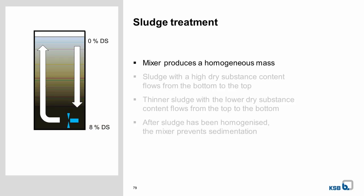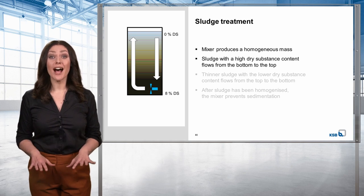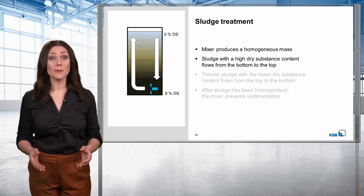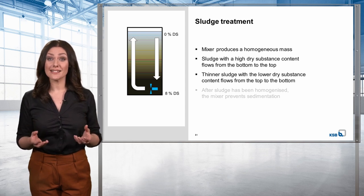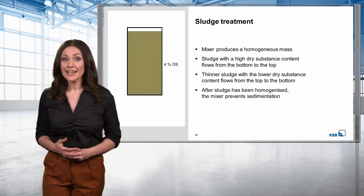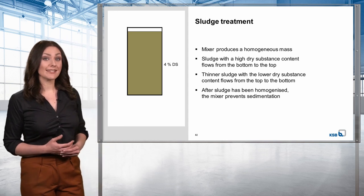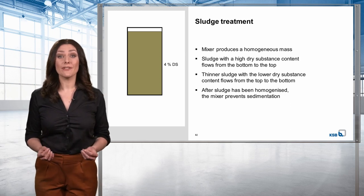This is where the mixer comes into play. Its first task is to produce a homogeneous mass. As the mixer is installed at the bottom of the tank, it moves the sludge with a high dry substance content from the bottom towards the top. At the same time, the thinner sludge with the lower DS content flows from the top to the bottom. When the mixer is started, it creates a homogeneous sludge with a DS content of 4%. After the sludge has been homogenized, the mixer prevents sedimentation.